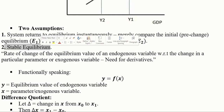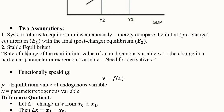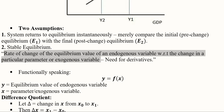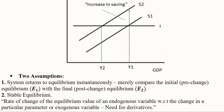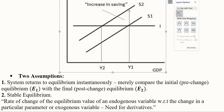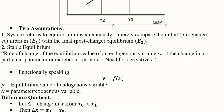The second assumption is that the equilibrium achieved is stable. The rate of change of the equilibrium value of an endogenous variable with respect to a change in a parameter or exogenous variable is stable. This means we are either at one equilibrium point or another — the change from one point to the other is instantaneous with no time lag.